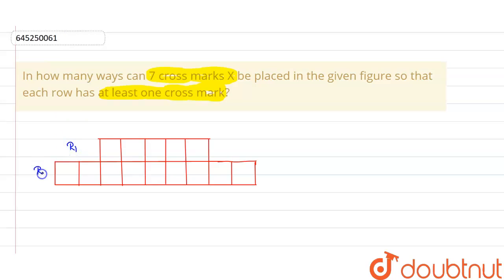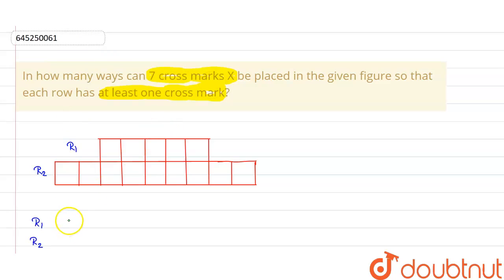And this is row two. Now the cases we will consider are: Case 1 — we put one cross mark in row one and six cross marks in row two, so that each row has at least one cross mark.